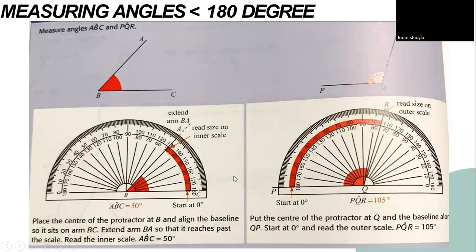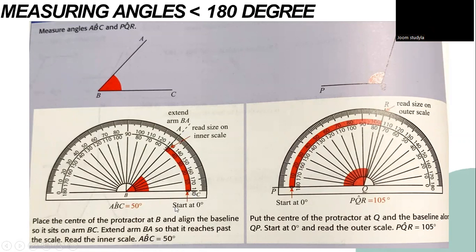When measuring angles less than 180 degrees, we use a protractor. For example, given angle ABC: place the center of the protractor at B and align the baseline along arm BC. Extend arm BA so that it reaches past the scale, then read the inner scale — angle ABC equals 50 degrees.